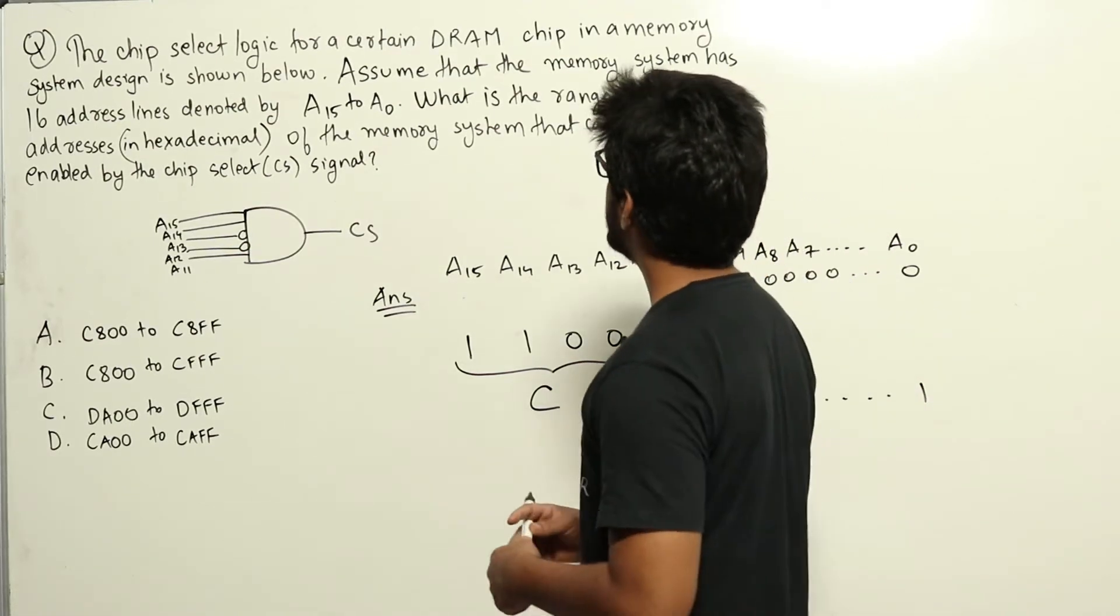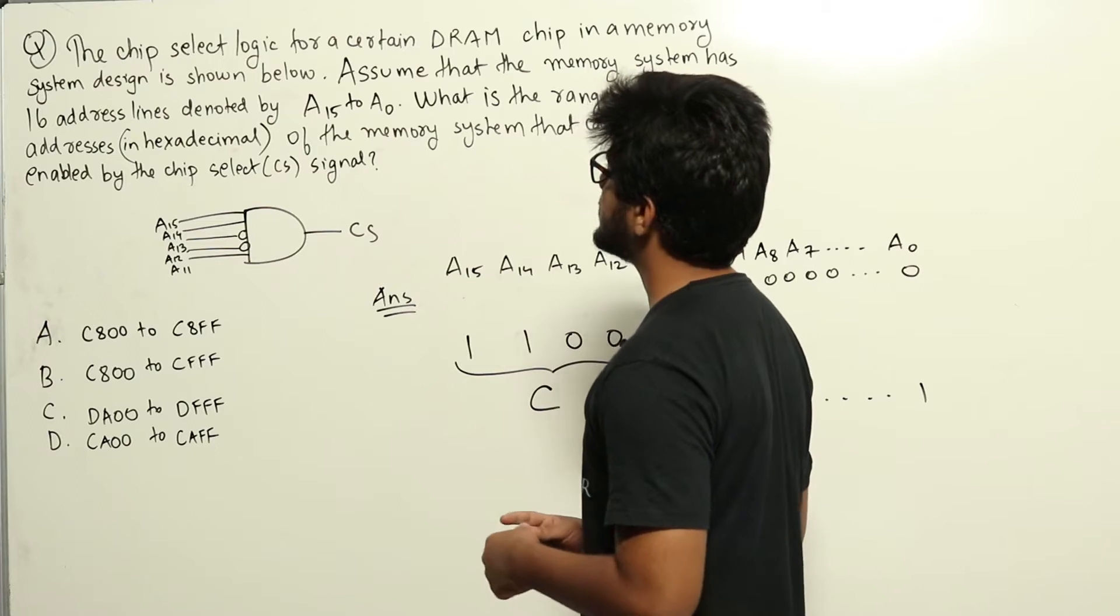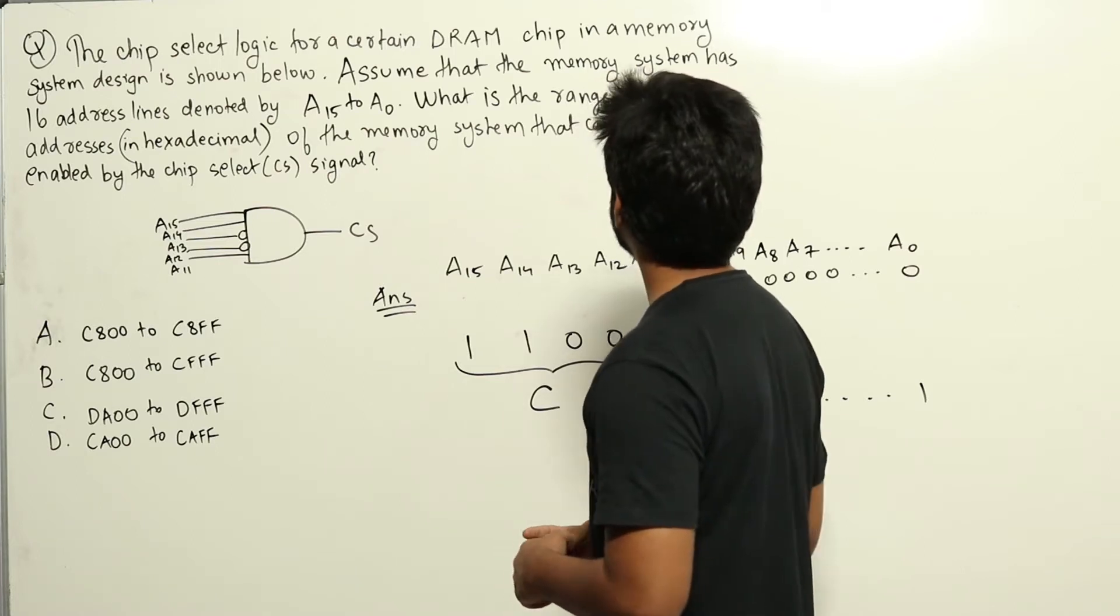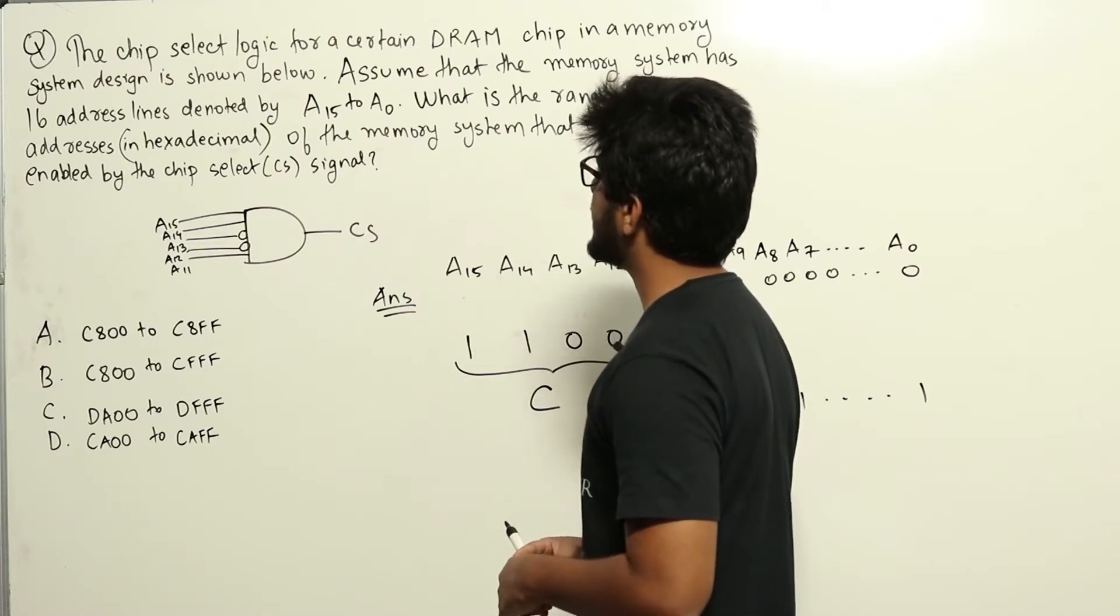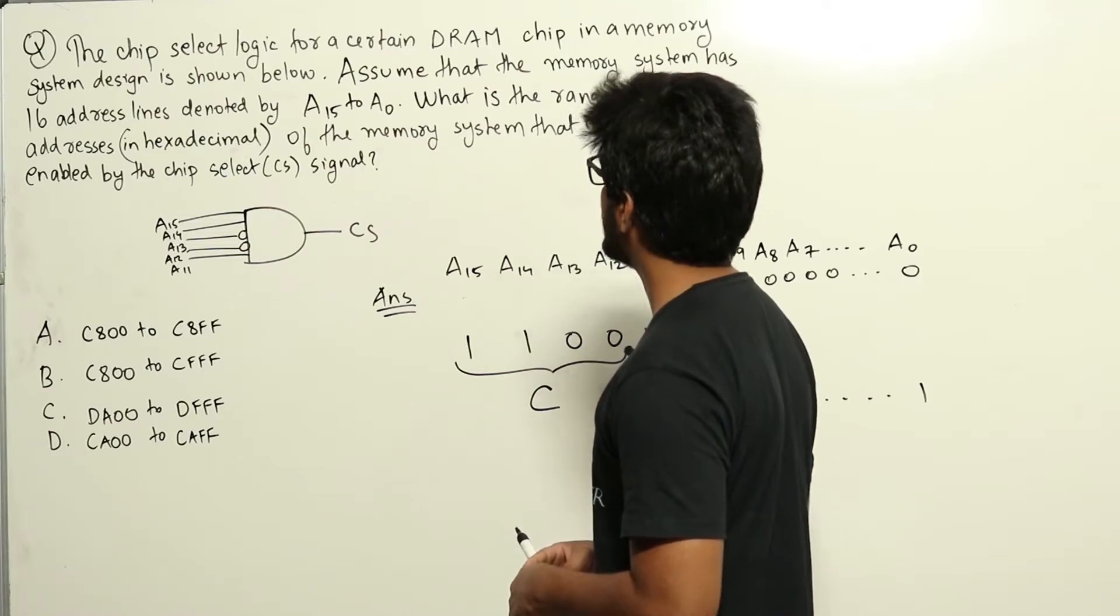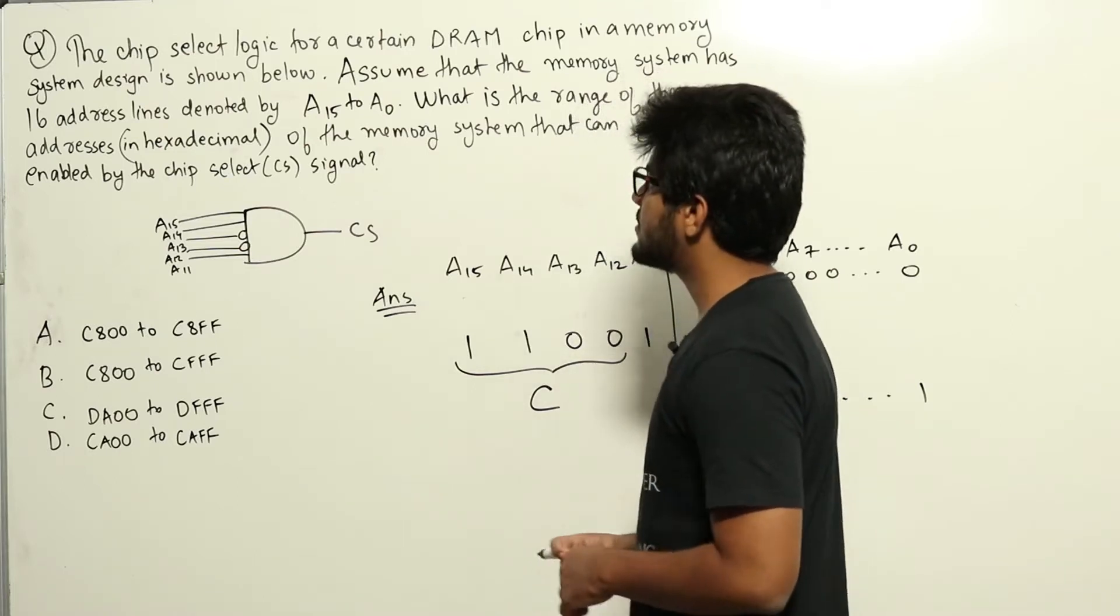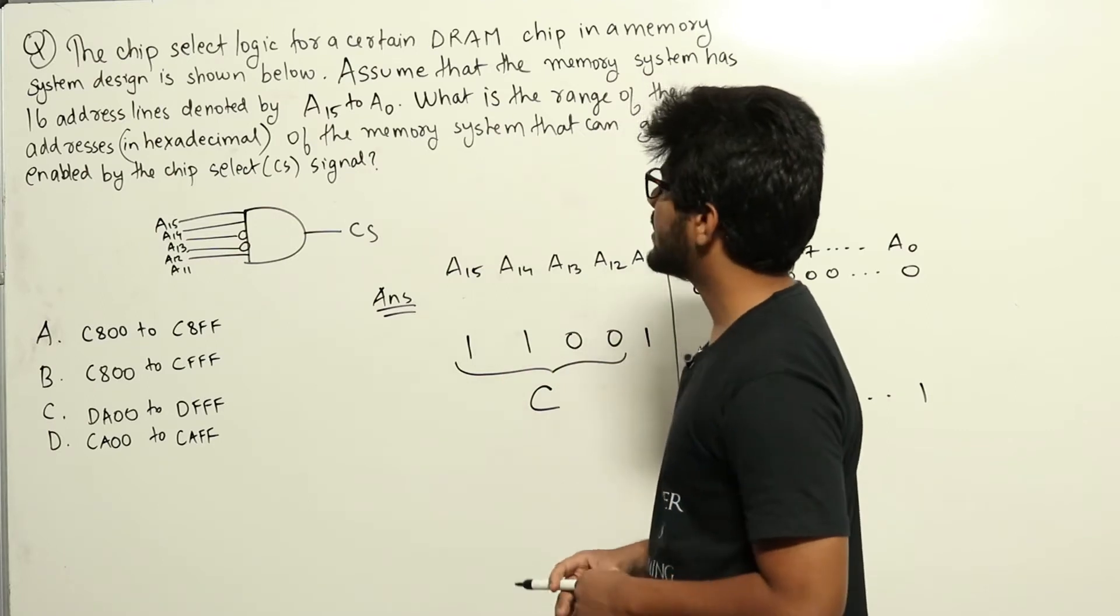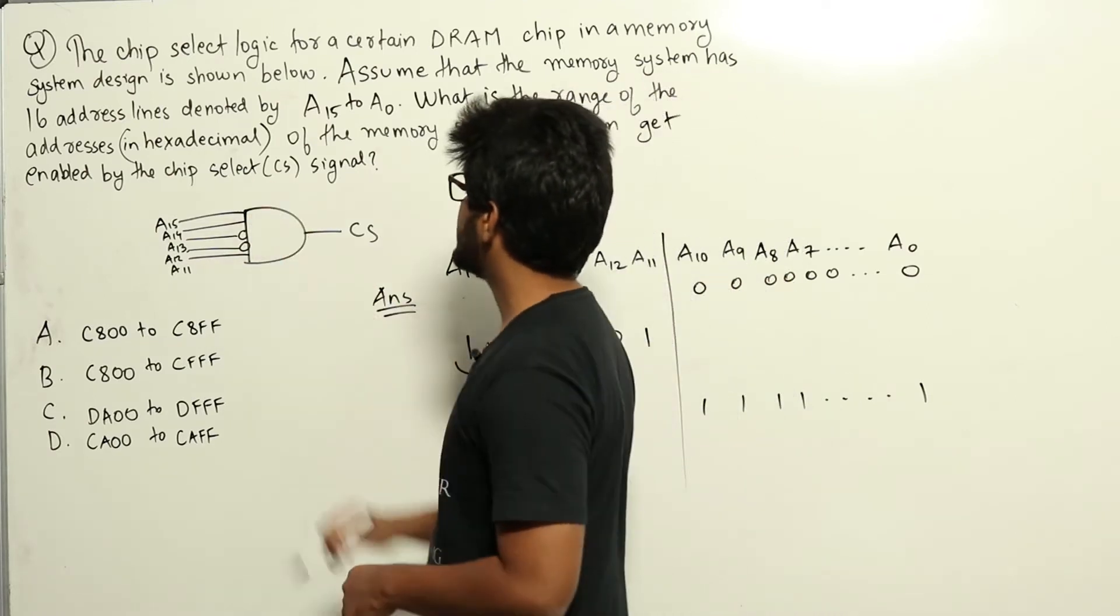The chip select logic for a certain DRAM chip in a memory system design is shown below. Assume that the memory system has 16 address lines denoted by A15 to A0. What is the range of the addresses in hexadecimal of the memory system that can get enabled by the chip select signal?